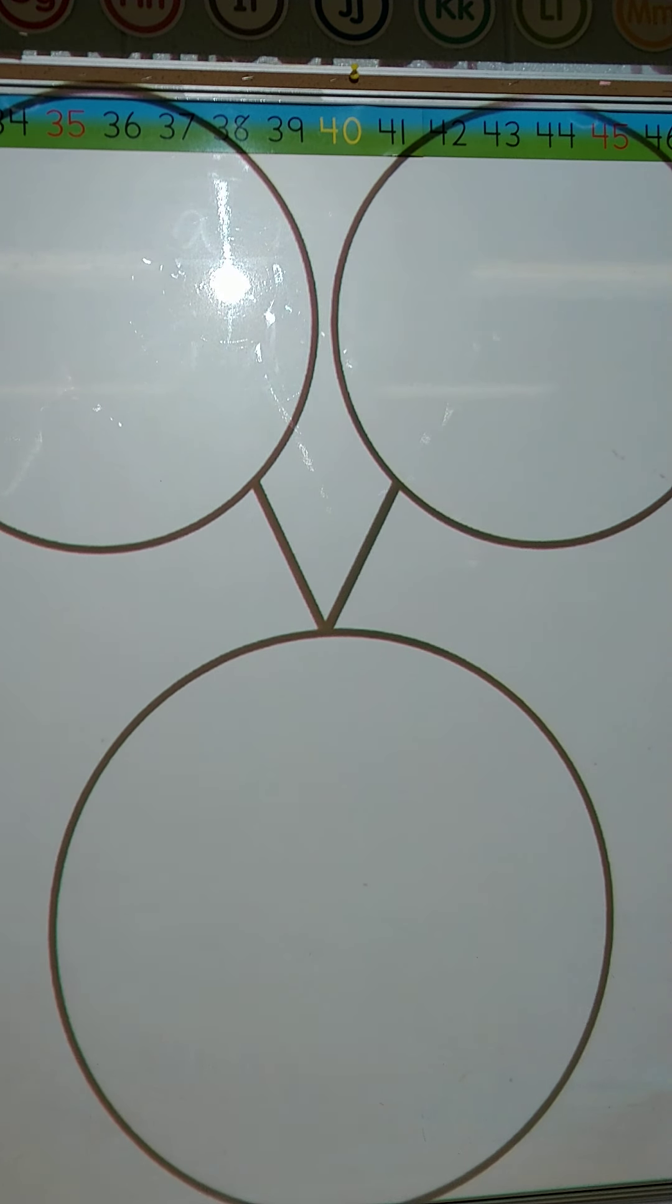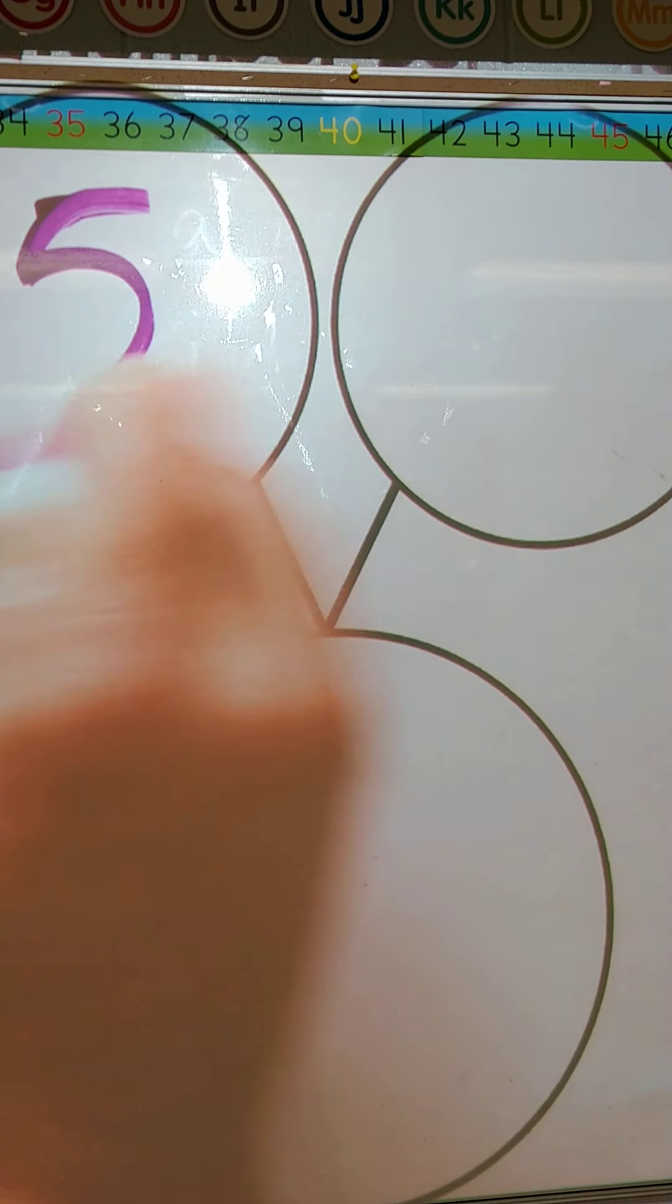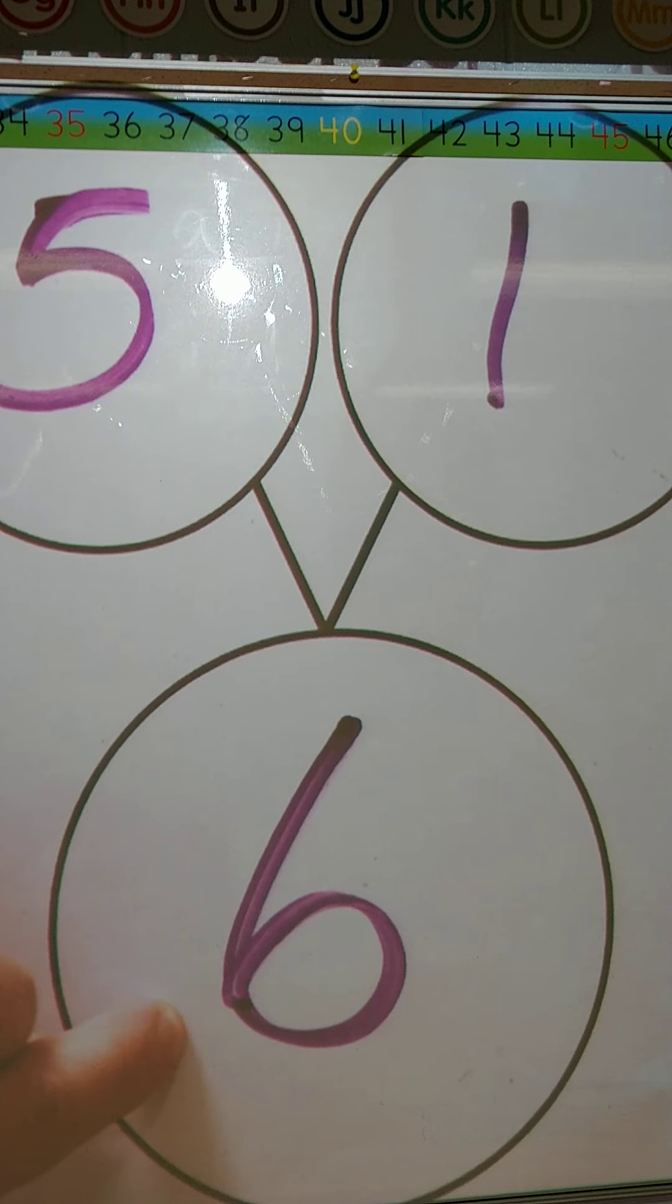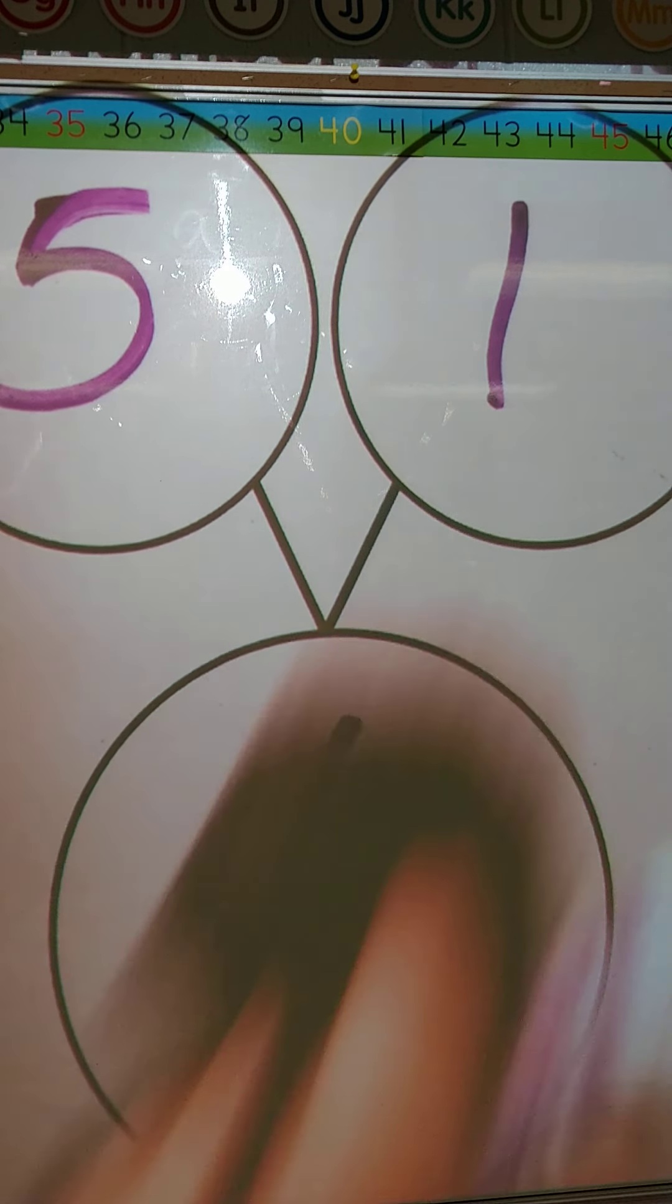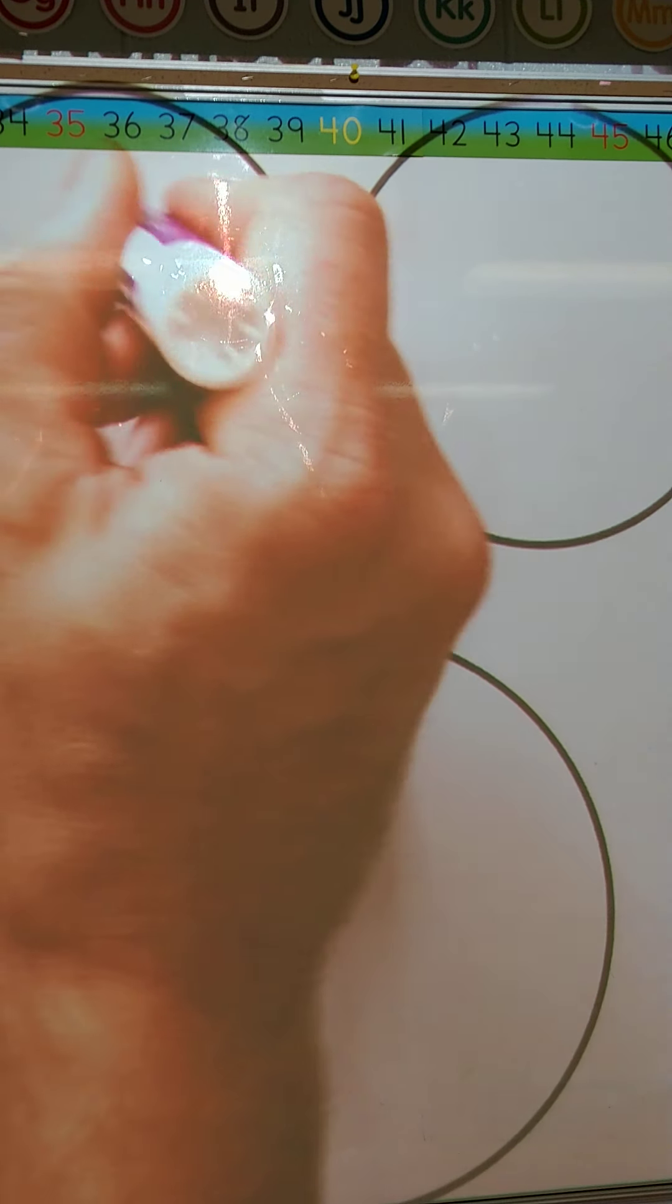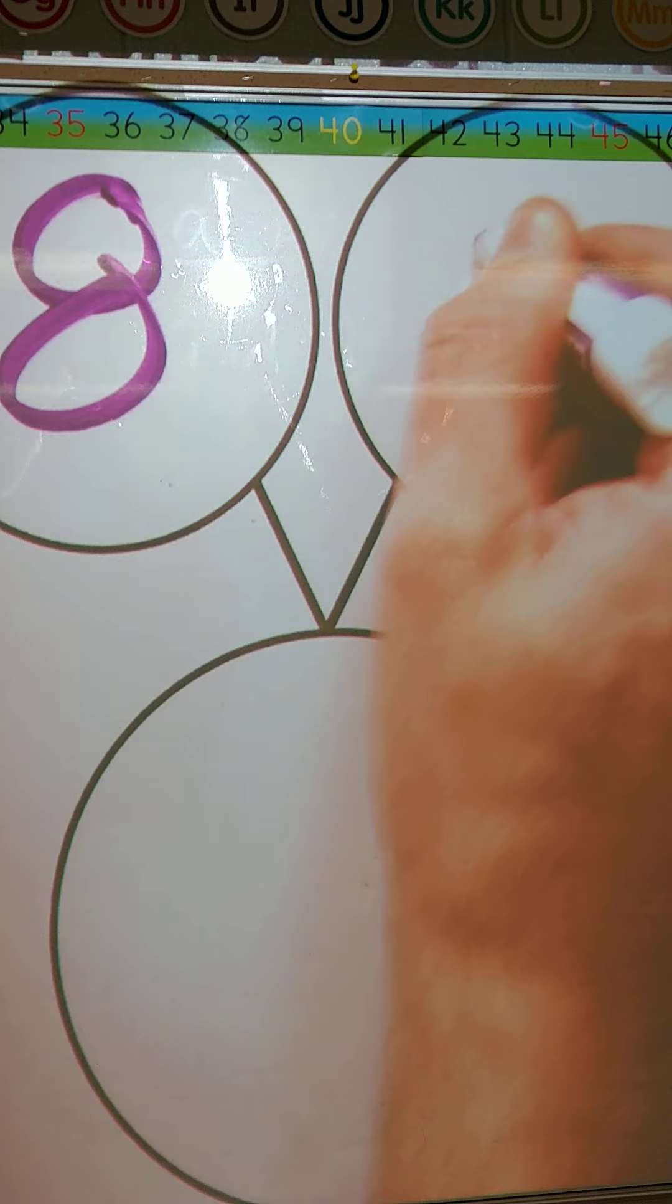Let's do another one. Let's do 5 and 1. One part is 5. Another part is 1. 5 and 1. One part is 5. One part is 1. And the whole is 6. Again, this is just to show us how a big number can be divided into 2 smaller numbers.